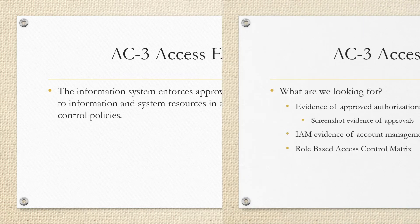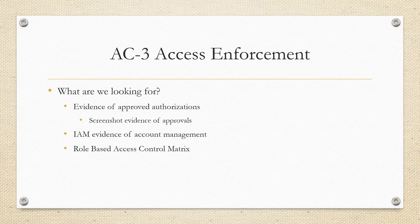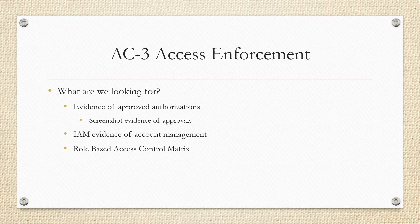When you're performing an audit on this control, there's specific evidence that you want to be looking for. The key is: are the enforcement mechanisms in place as they are stated within your access control policies? That can be evidence of approved authorizations via screenshots — an end-to-end process walkthrough of requesting access to something, that access being approved, and then that access being provisioned end-to-end as it states within your access control policies.